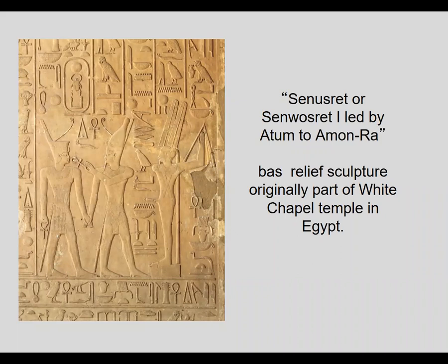We're going to talk about a really ancient bas relief sculpture that was originally part of the White Chapel Temple. Later that temple was taken apart and installed in another building. Then it was taken apart again, and the White Chapel was reassembled in the 20th century. This particular piece is Senusret I, led by Atum to Amun-Ra. This is Senusret, this is Atum, and this is Amun-Ra.